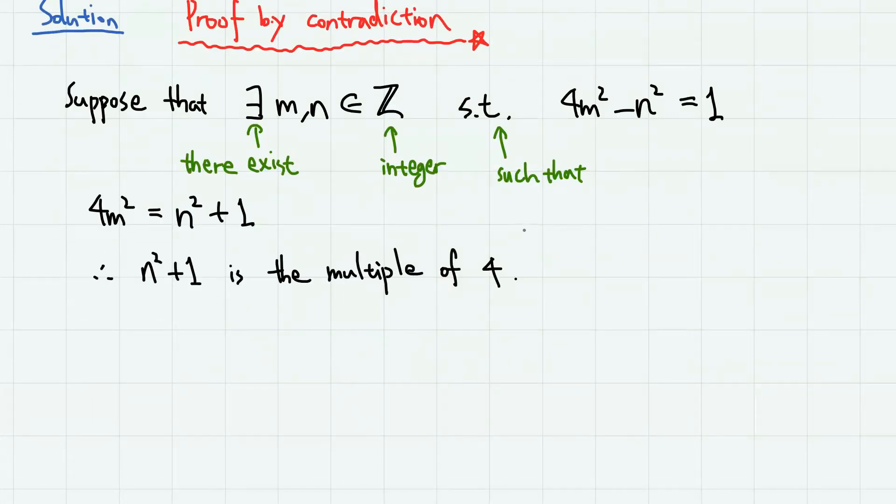And therefore n² + 1 is the multiple of 4. In other words, using modular notation, we can write n² + 1 ≡ 0 (mod 4). Now this means that n² ≡ 3 (mod 4), which means that if we divide n² with 4, it gives the remainder 3.